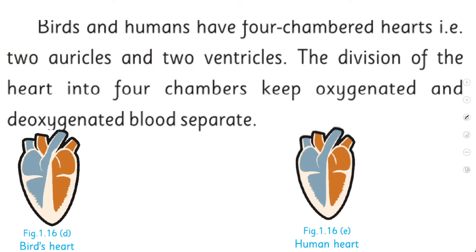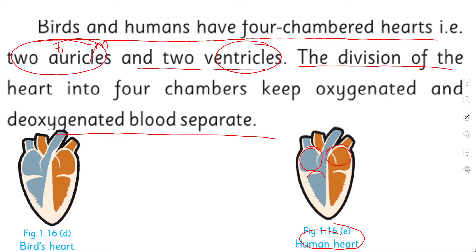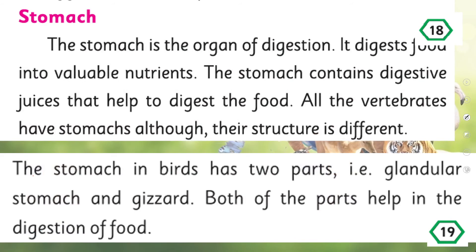Birds and humans have four-chambered hearts — two atria and two ventricles. The division of the heart into four chambers keeps oxygenated and deoxygenated blood completely separate. In the human heart you can see four chambers with a septum between them that prevents blood from mixing. The bird's heart similarly has four chambers with a septum keeping the blood types separate.